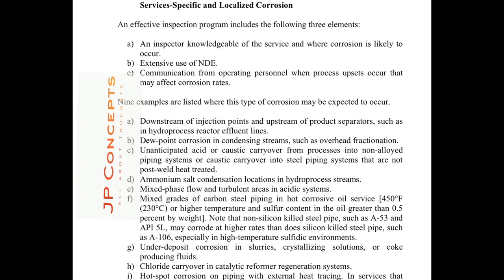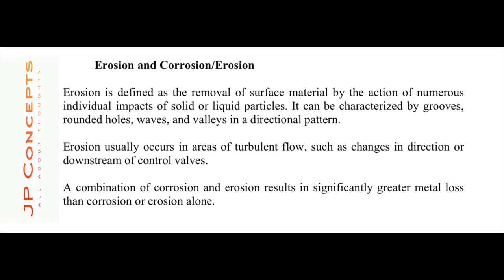Further examples of localized corrosion locations include: ammonium salt condensation locations in high-proportion process streams; mixed-phase flow and turbulent areas in acid systems; mixed grades of carbon steel piping in hot corrosive oil service — for example, A53 and API 5L pipes, which are non-silicon-killed steel, may corrode at higher rates than silicon-killed steel pipes like A106; under-deposit corrosion in slurries, crystallizing solutions or co-produced fluids; chloride carryover in catalytic reformer regeneration systems; and hot-spot corrosion on piping with external heat tracing.